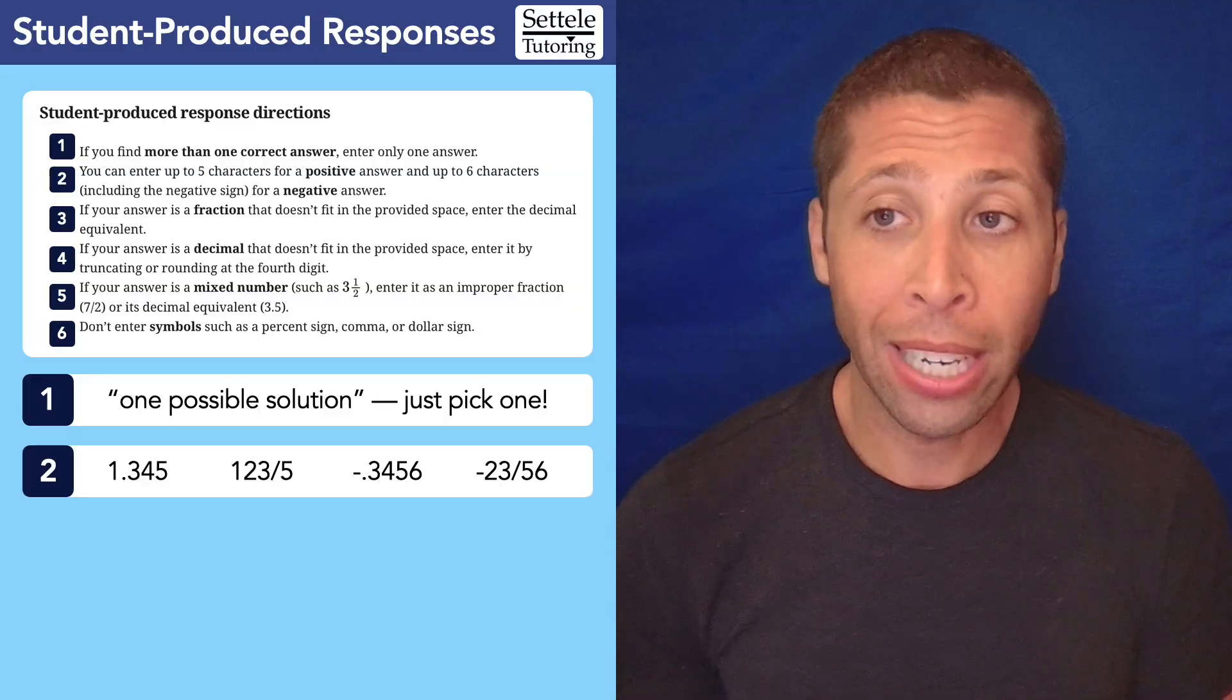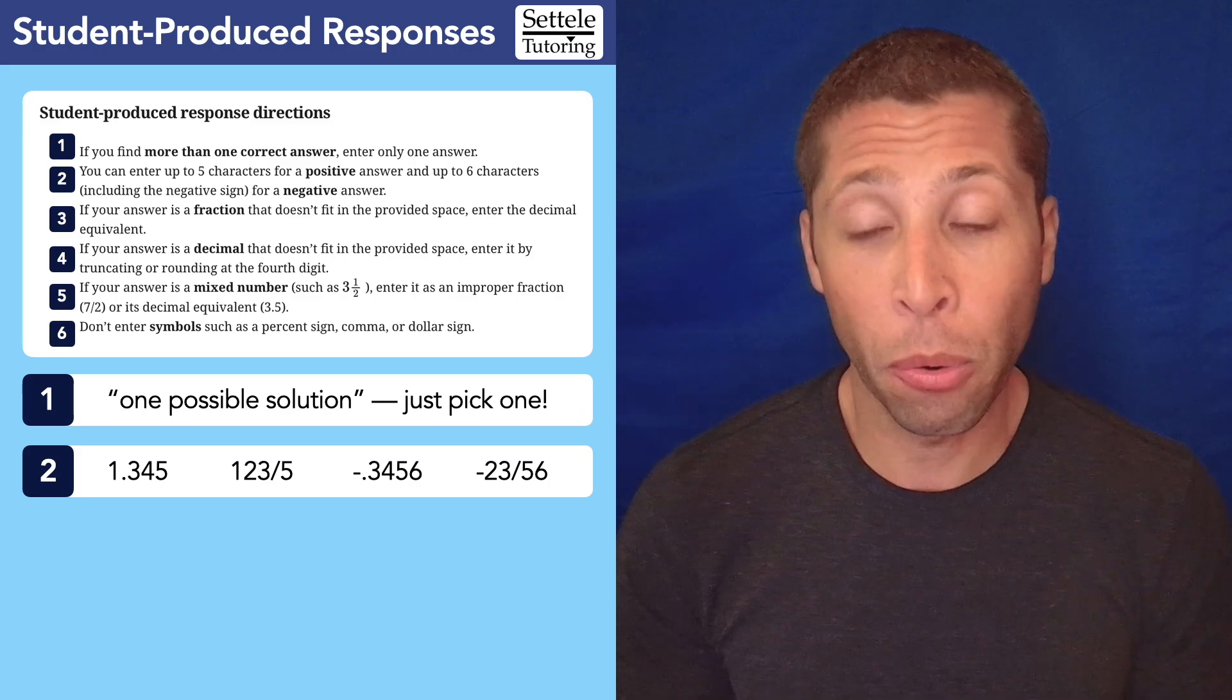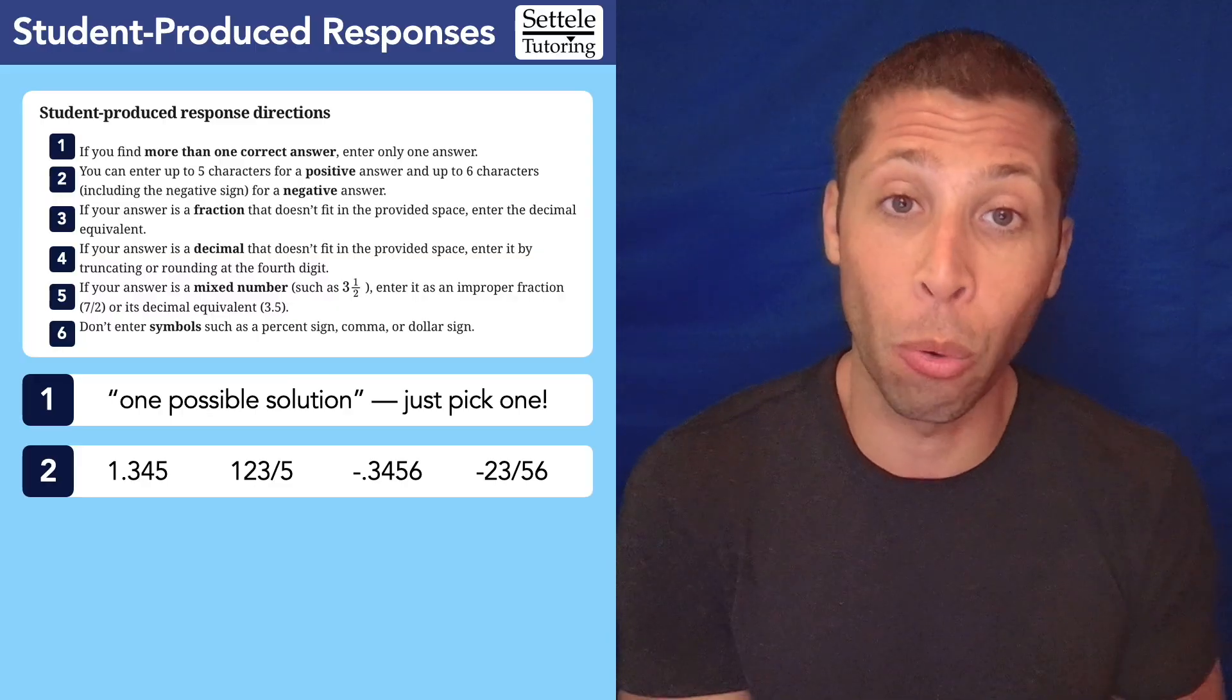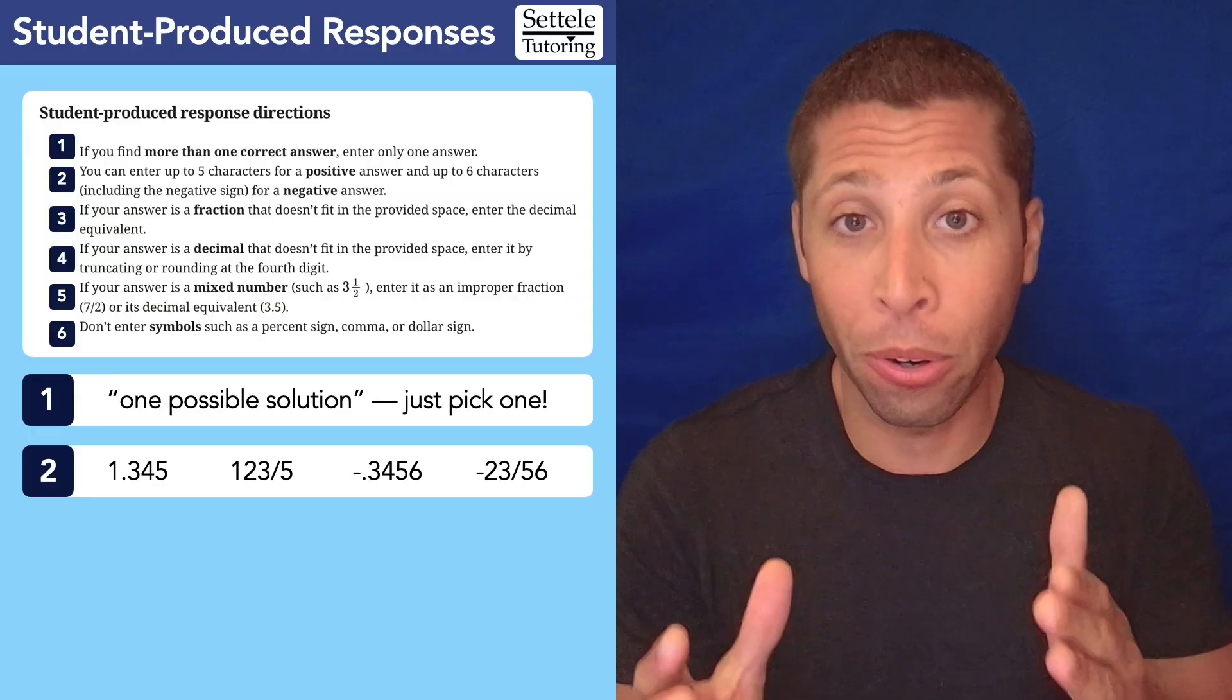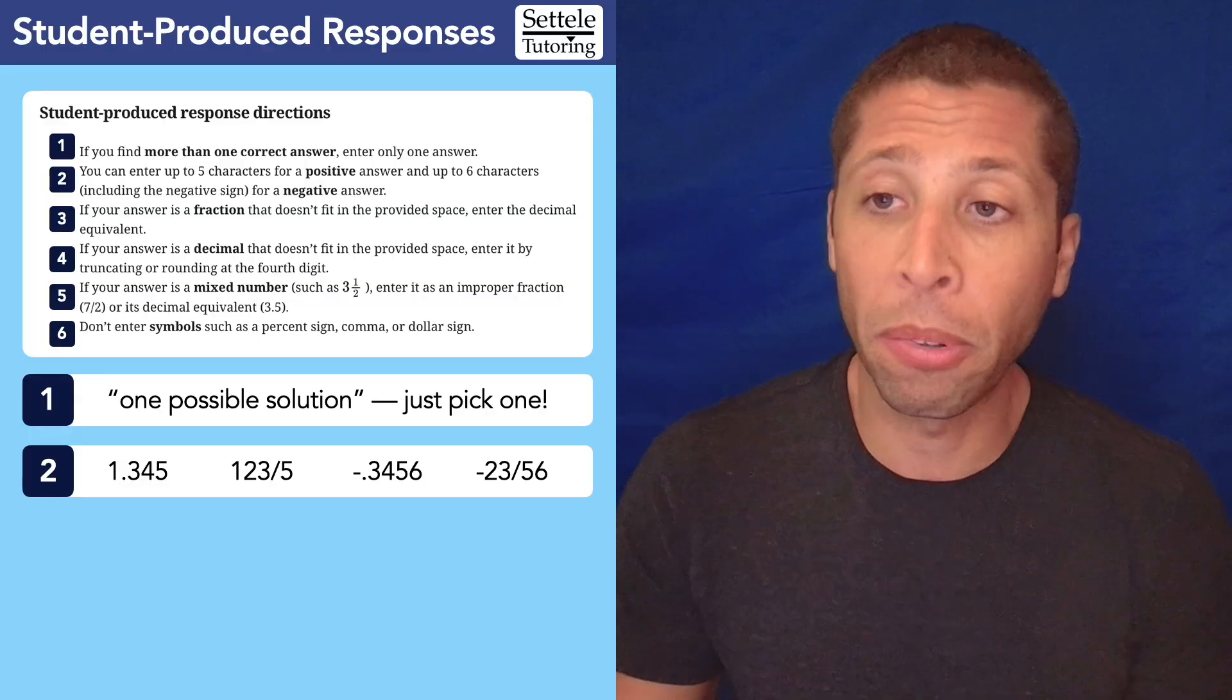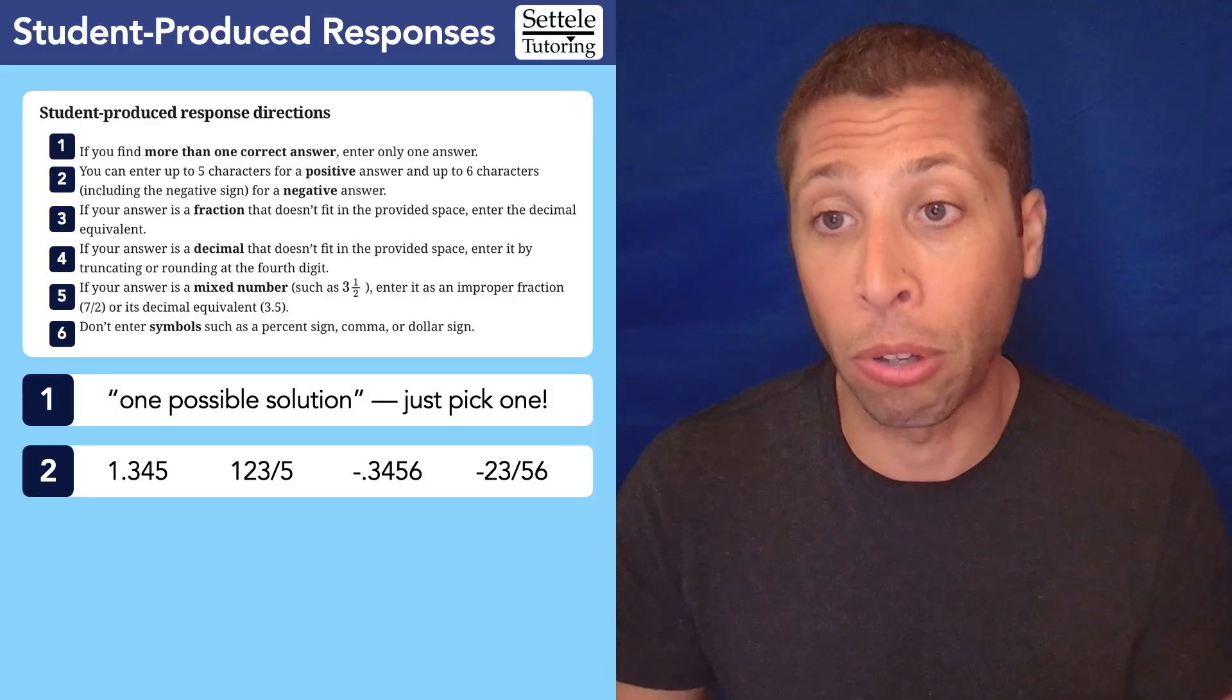So let's look at those three rules together. They kind of all work together. Rule three, if your answer is a fraction that doesn't fit in the provided space, enter the decimal equivalent. So fraction doesn't fit, convert it to a decimal. But rule number four, if your answer is a decimal that doesn't fit in the provided space, enter it by truncating or rounding at the fourth digit. So truncate means to shorten. So literally you can just cut the decimal off at the fourth digit, not the fourth decimal place, the fourth digit. So we'll talk about more about that because that's the rule people mess up. But rule number five, if your answer is a mixed number, such as three and a half, enter it as an improper fraction, seven halves or at decimal equivalent 3.5.